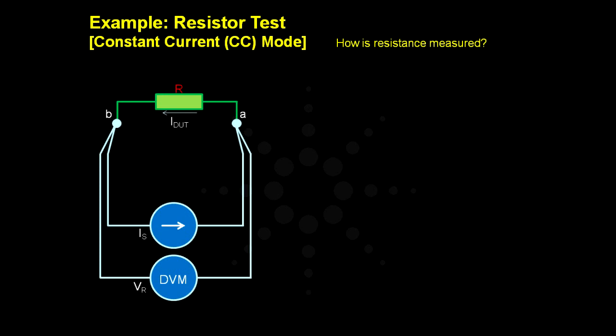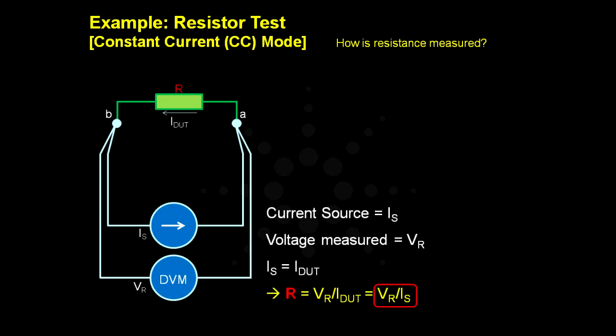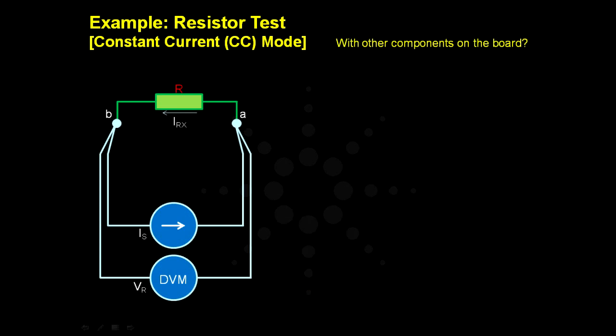In this way, assuming IS equals IDUT, the resistance can be calculated by VR over IDUT. Considering other components on the board, they form a resultant parallel impedance as represented by ZA and ZB in the diagram.